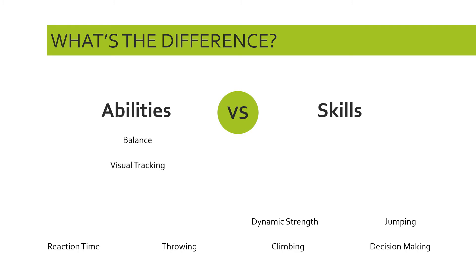What about dynamic strength? Dynamic strength is the ability to exert a force repeatedly — very similar to the concept of muscular endurance. It's the ability to repeatedly produce a force over a period of time in response to an environment. For the purposes of this video, we're going to say that dynamic strength is, in fact, an ability. We can improve and train it, but in and of itself it's something innate, part of our set of abilities as a human being.